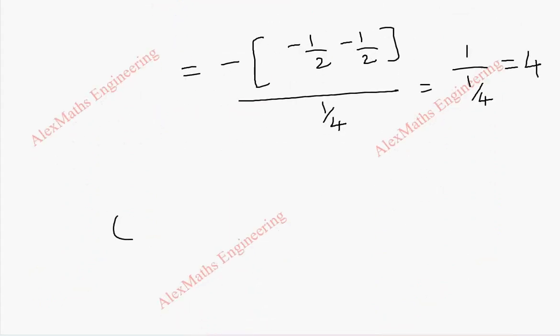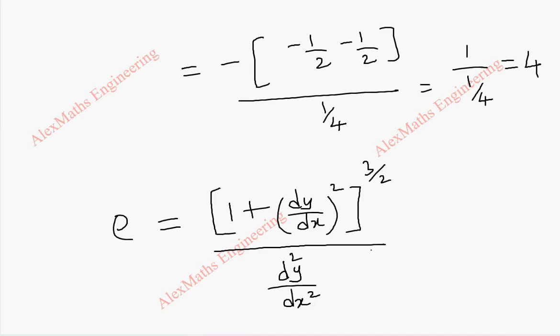Now, the radius of curvature formula rho is 1 plus dy by dx whole square raised to the power 3 by 2 whole divided by d square y by dx square. This is 1 plus dy by dx is minus 1 squared, which is plus 1 whole power 3 by 2 divided by 4.